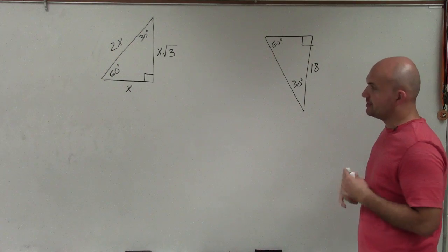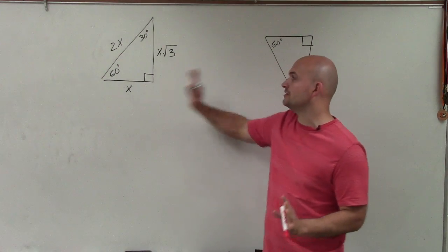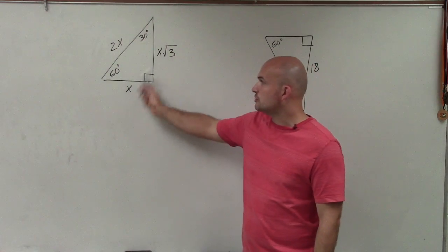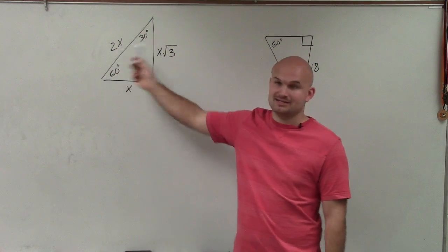And the main important thing that we want to understand is, looking at a 30-60 triangle, identifying what we have and what we're looking for. So there's a short leg, a long leg, as well as the hypotenuse.